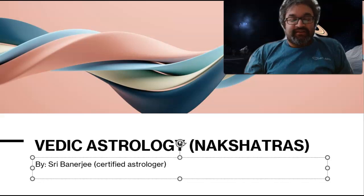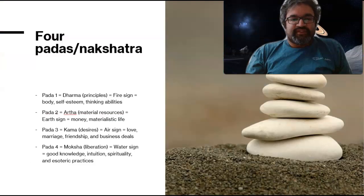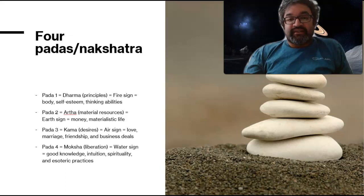Hello, I'm Dr. Tree Banerji, a certified astrologer. In this segment I'll be going over Vedic astrology, explaining a bit more about something called nakshatras. Nakshatras are actually known as lunar mansions — they're constellations, and there happen to be 27 of them.